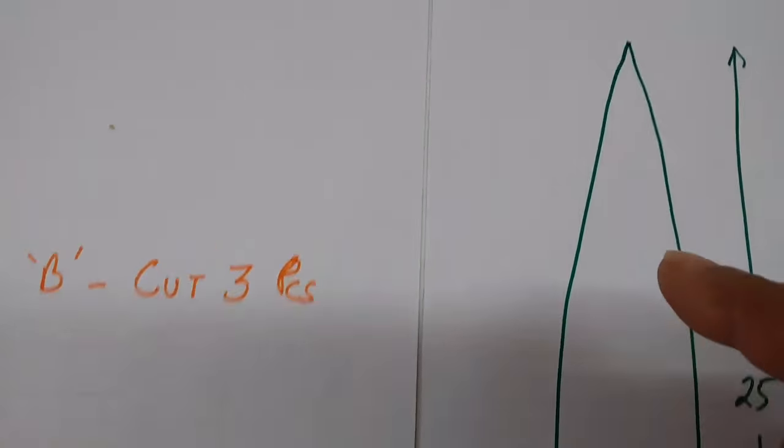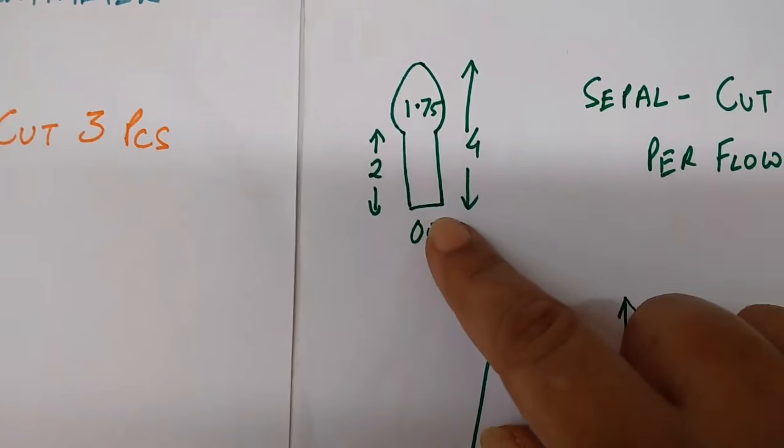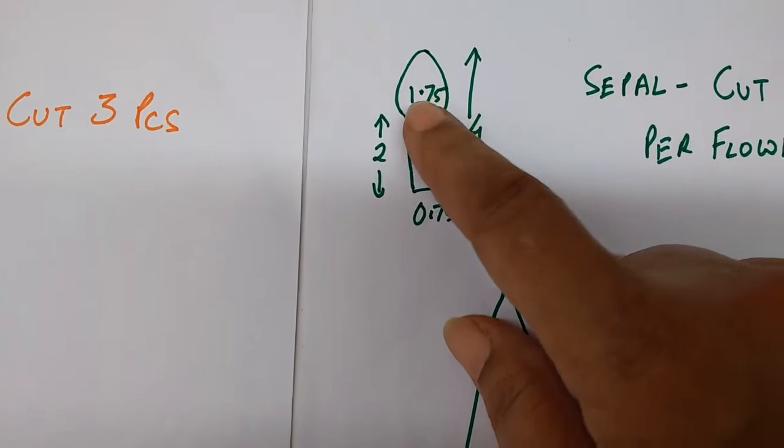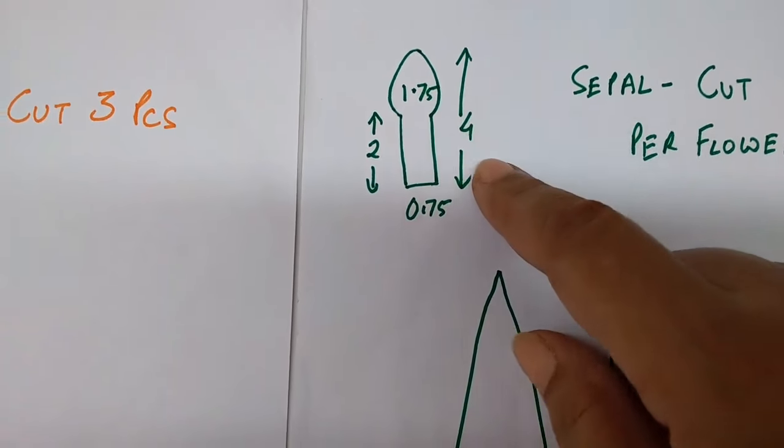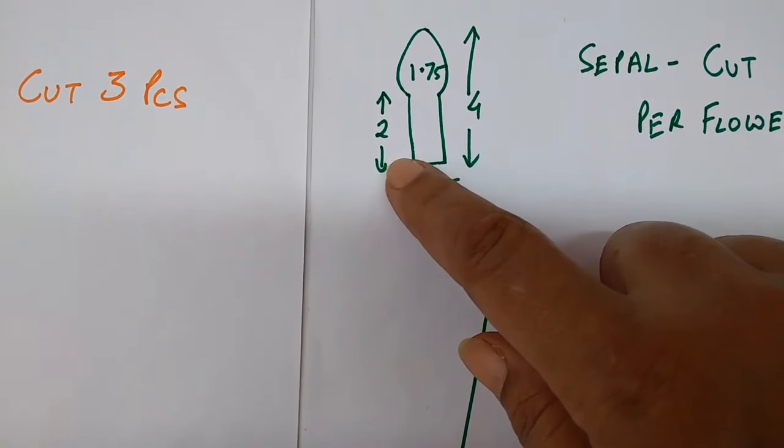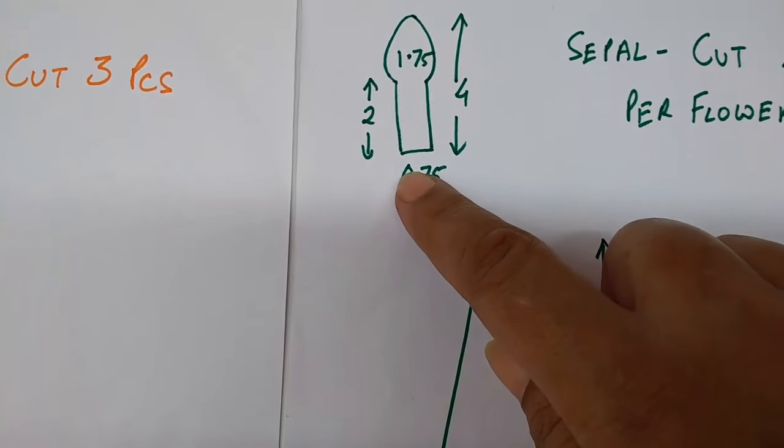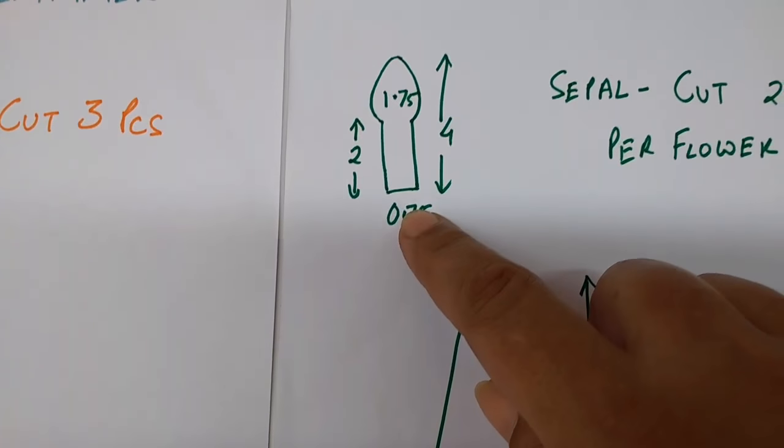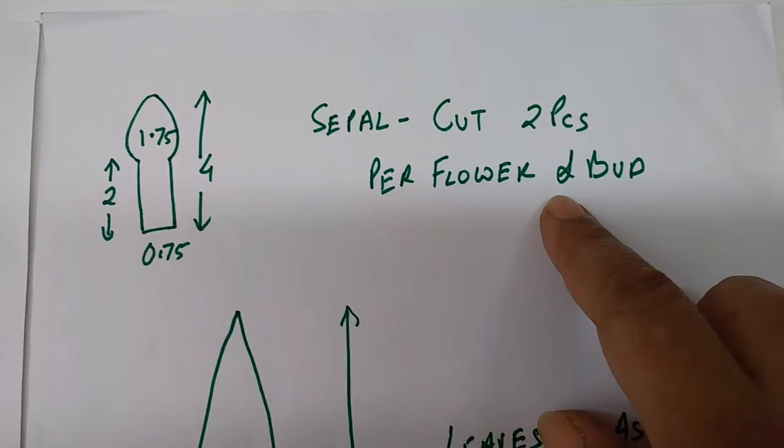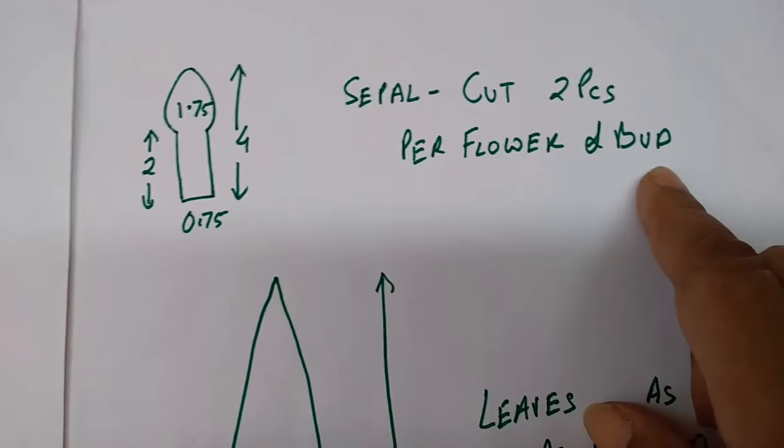This is the stencil of a sepal. This is 1.75 here and 4 cm high. The stem is 2 cm high and the base is 0.75 cm wide. Cut 2 pieces per bud and per flower.